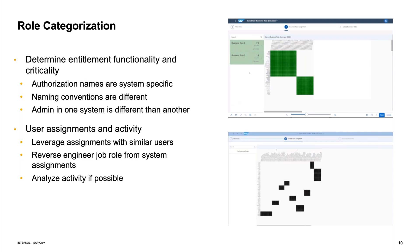Understanding what those T codes do and what kinds of capabilities they expose is really a big challenge. If you have a system with many thousands of roles and many thousands of users, it's impossible for someone who isn't an expert in SAP to know that a particular access is very sensitive and needs to be carefully tracked and monitored. The first step of role categorization is trying to make sense of what these kinds of roles do and who has access in the first place.